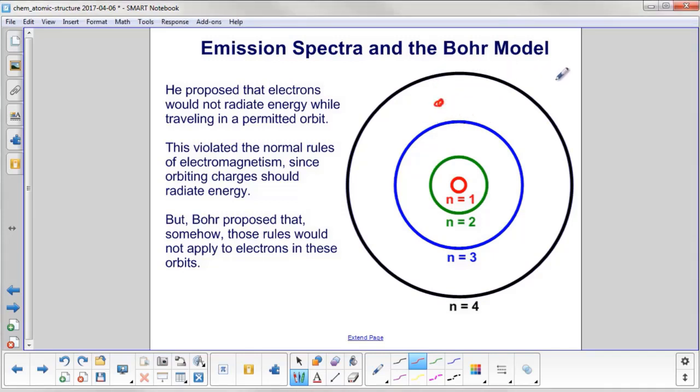You could not find an electron here, for example, or an electron here. And he said that when they were in these orbits, they would not radiate energy. That's kind of a problem because that violates the rules of electromagnetism, since orbiting charges should radiate energy. But Bohr said somehow these rules don't apply to electrons in these orbits.